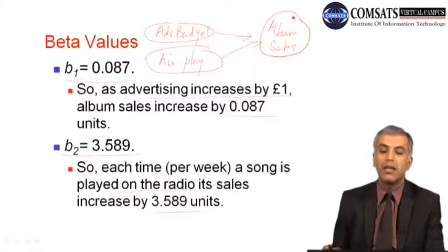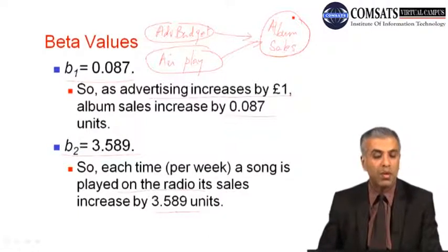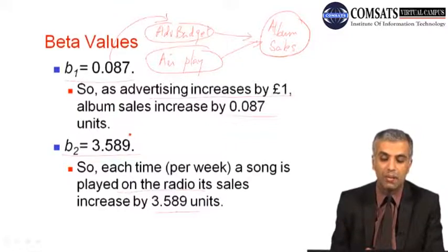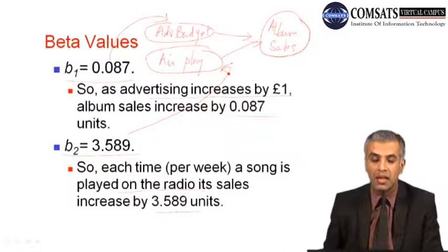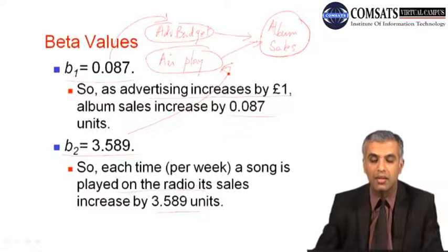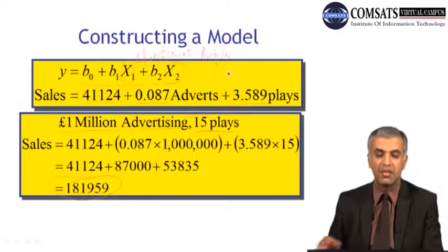We tested this model through multiple regression, and by plotting these values in SPSS, we were reported beta values for both. For advertising budget, beta 1 value was reported, and for airplay, B2 was reported. From this, we came to know how much unit change in the independent variable would cause the desired change in the dependent variable. We then had a discussion on how to represent this model mathematically.